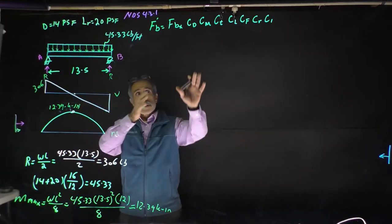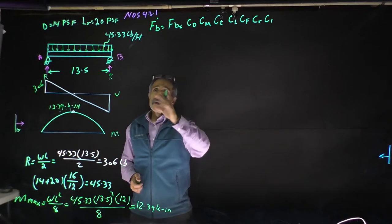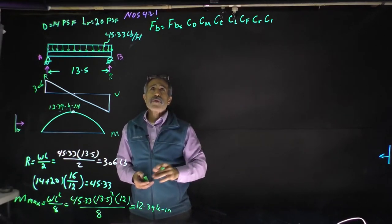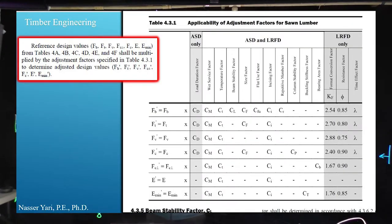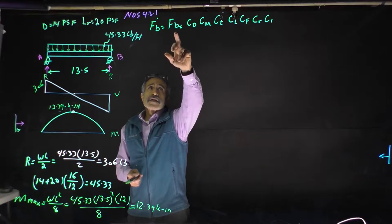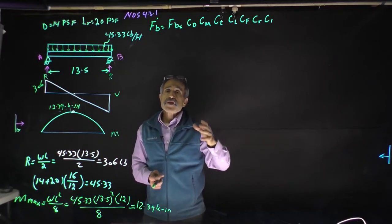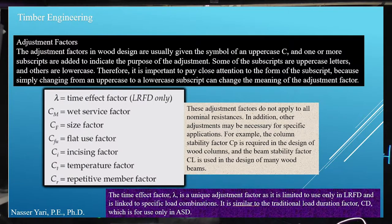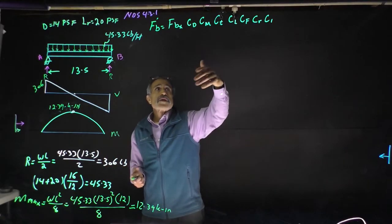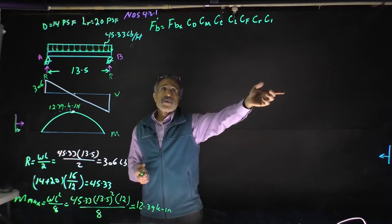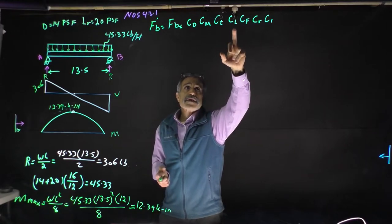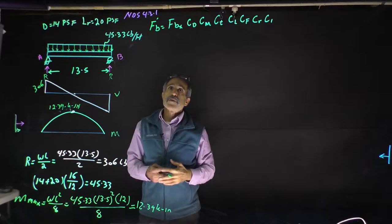We will calculate the stress due to the load and compare to the allowable stress. When we look at the wood beam itself, we look at table 4.31, and there are seven stresses there. We're going to use four of them: bending stress, shear stress, bearing stress, and the modulus of elasticity E-prime. The bending stress FBX must be multiplied by different adjustment factors — CD depends on load combination, and then you have size factor, bracing factor, incising, and more.